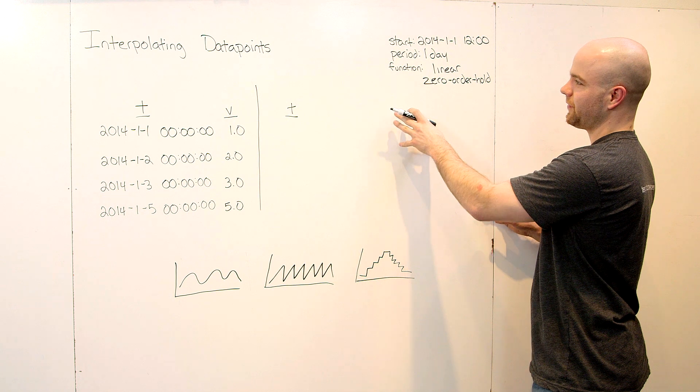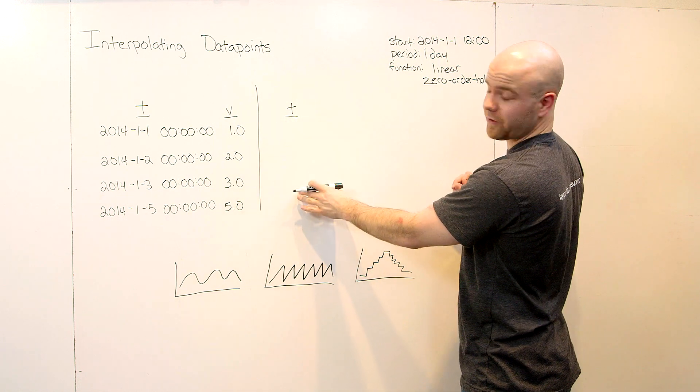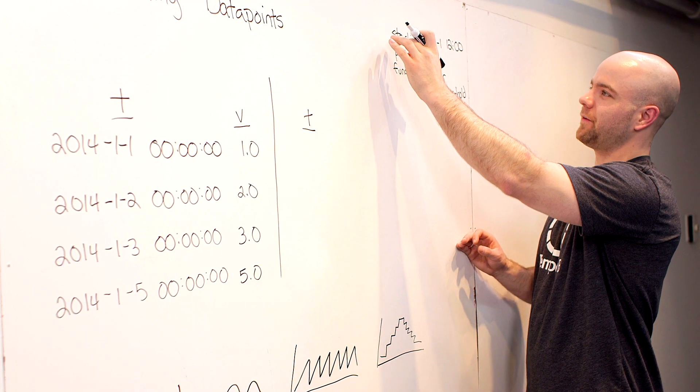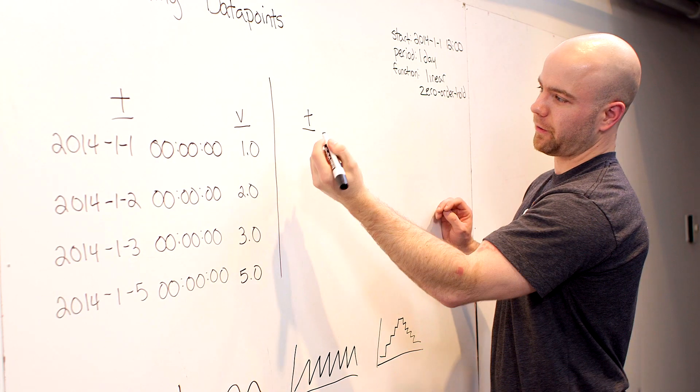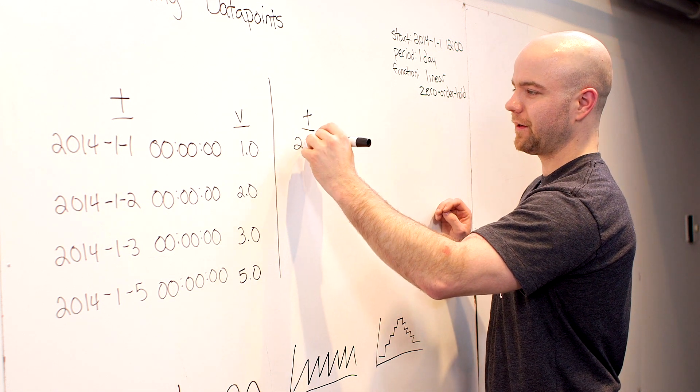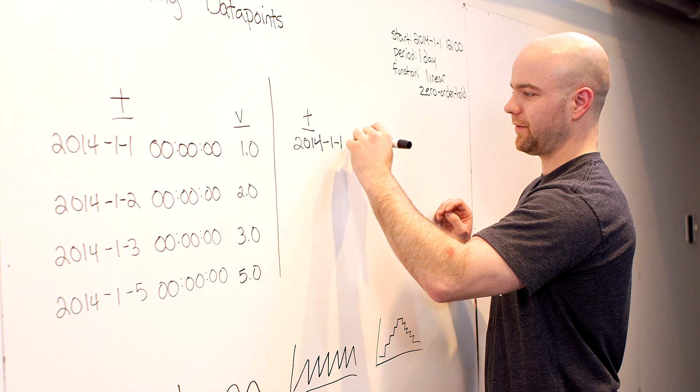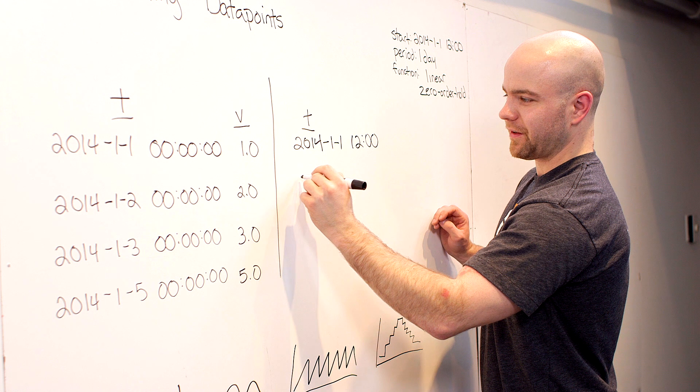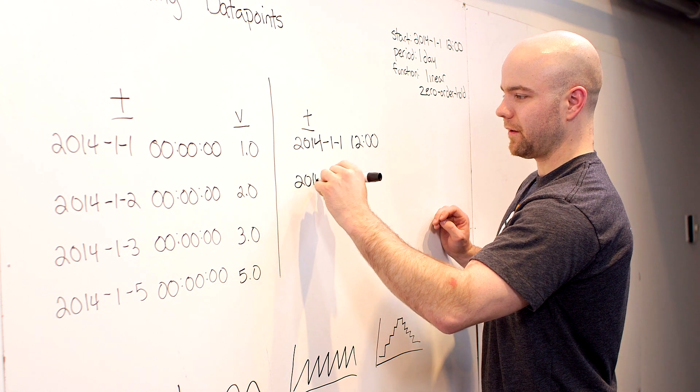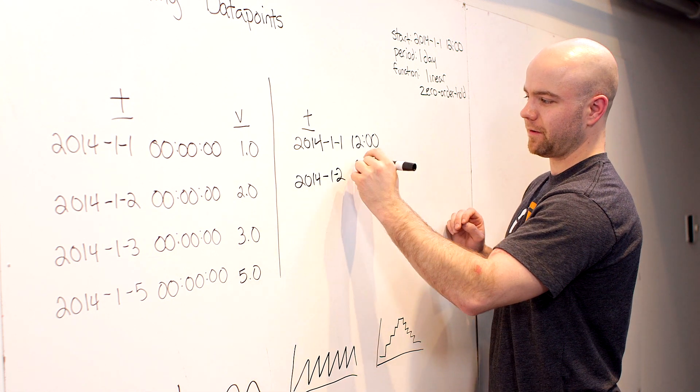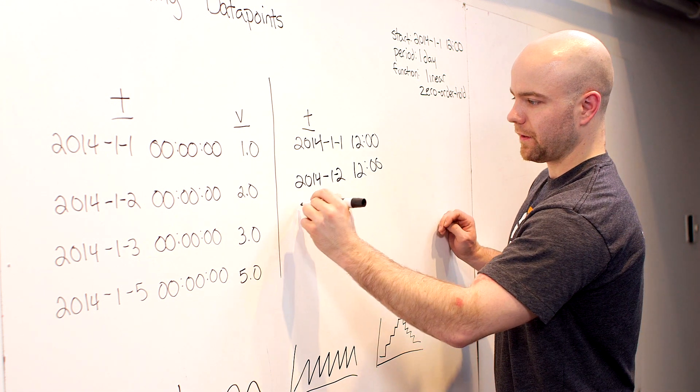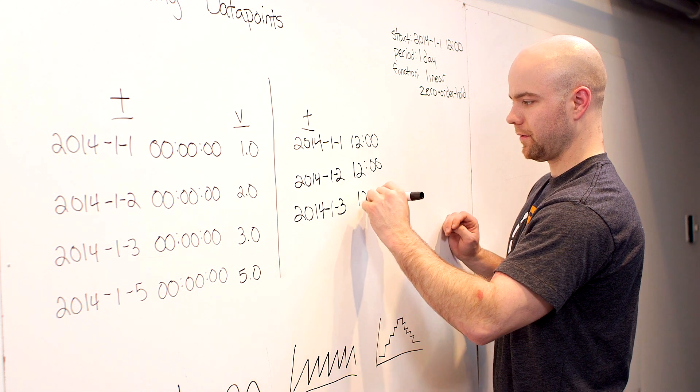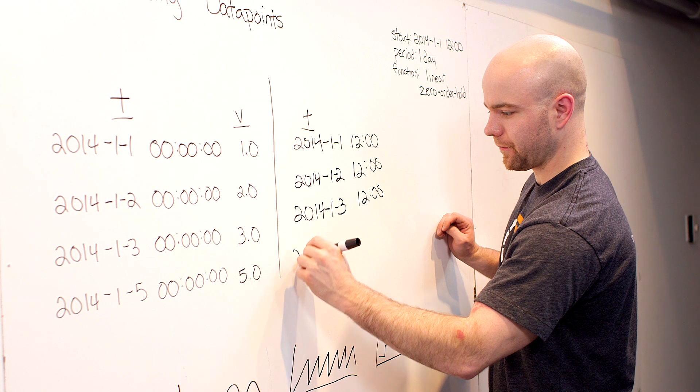Let's talk about what happens as this query begins. The first thing we're going to do is generate a list of timestamps at which we should have data, and we're going to do that based on the start and the period. The first point that you get back is always going to be the same as the start of the query. The second point in this example is going to be on the second, we have a period of one day, also at noon, then the third, and finally the fourth.